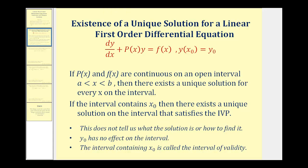A couple things to notice: the first term is p(x), the second is f(x), and x-sub-zero is the x value from the initial condition. This theorem does not tell us what the solution is or how to find it — it just tells us if there's a unique solution. Also, y-sub-zero from the initial condition does not affect the interval, and the interval containing x-sub-zero is sometimes called the interval of validity. The main idea is to find the interval on which both p(x) and f(x) are continuous, and this will be the interval for which unique solutions exist.